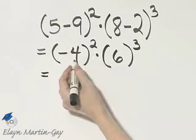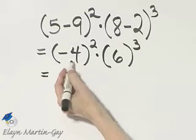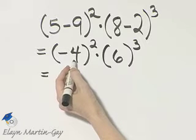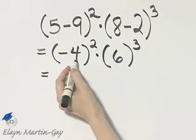Remember what negative 4 squared means? It means negative 4 times negative 4, and a negative times a negative is a positive, and 4 times 4 is 16.